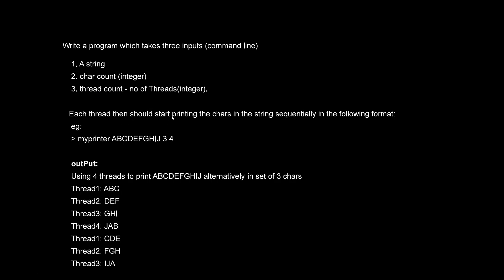Each thread should start printing the characters of the string sequentially in the following format. The way you will execute your program — let's say the name of your executable is 'my_printer'. When you run it, it accepts three command line inputs: the string 'abcdfghij', a character count of three, and a number of threads which is four.